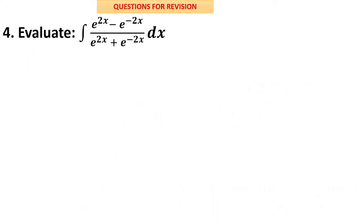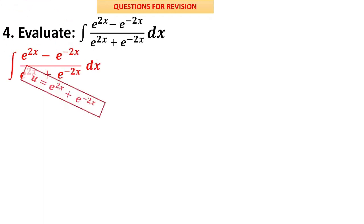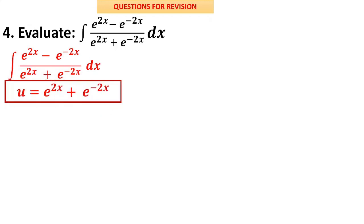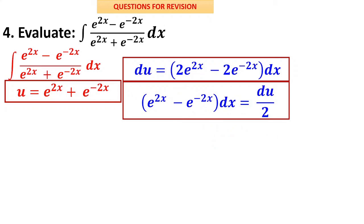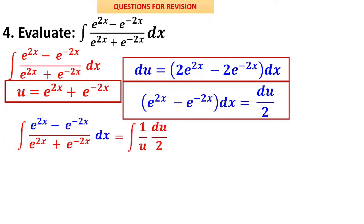Question 4 involves an exponential integrand. Whenever an exponential appears, recall its derivative is itself. Identify whose differentiation appears in the numerator. The differentiation of e^(2x) is 2e^(2x) and the differentiation of e^(−2x) is −2e^(−2x) by the chain rule, both of which appear in the numerator. Taking u as the denominator expression and du = (2e^(2x) − 2e^(−2x))dx, we get dx terms = du/2. Substituting gives (1/2)∫(du/u) = (1/2)log|u| + C, then resubstitute.